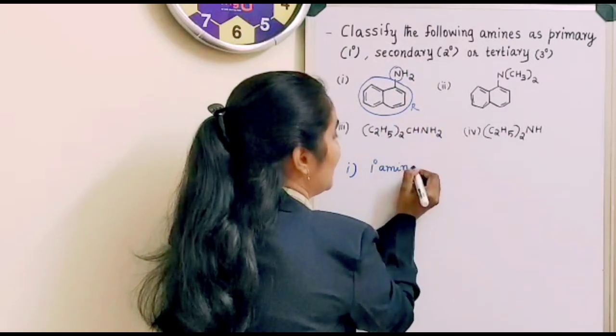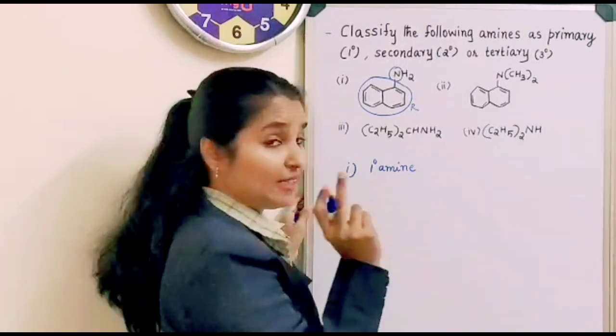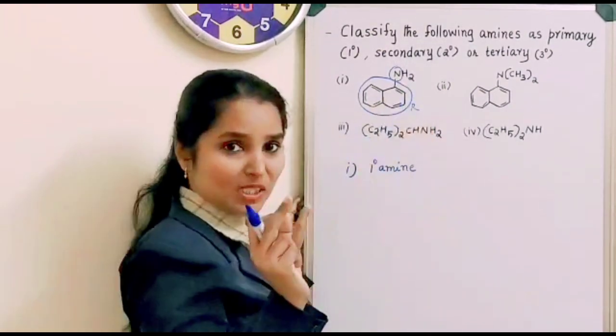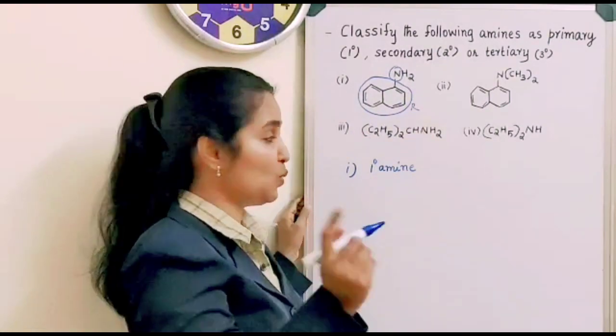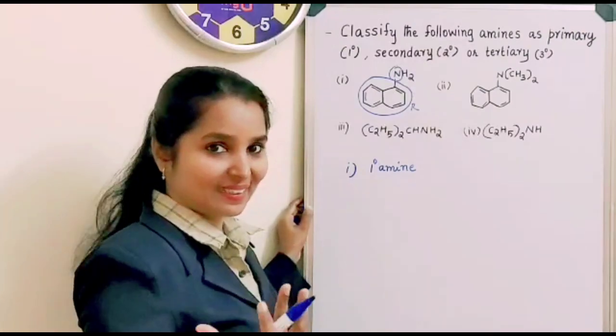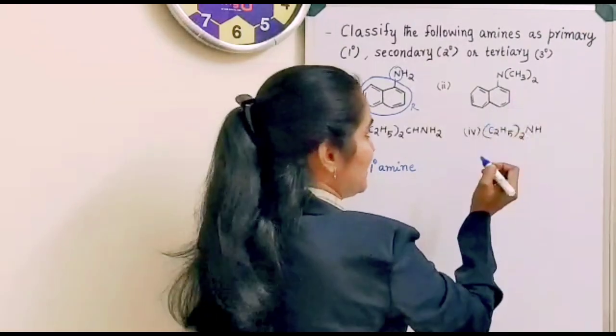It is a primary amine where substituent is only one. One substituent means primary amine. One R means primary amine. Clear, no? Now the second question.